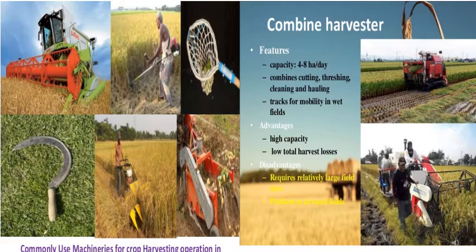A farmer with a smaller area of cultivation cannot use a combined harvester or harvesting machines, so he has to go for manual harvesting. In manual harvesting, a tool such as a sickle is used and the farmer has to hire labor. Manual harvesting is time-consuming — that is the big disadvantage. With a machine, the whole crop field can be harvested within a few hours, whereas manual harvesting may take a full day or two.